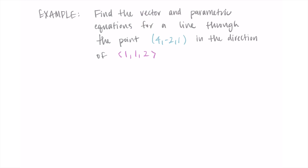We're given a point and a vector, and that's all we need for the equation of a line — we just need to assemble everything. The equation of a line in three dimensions uses the vector r(t), which equals r₀ plus t times the vector v.